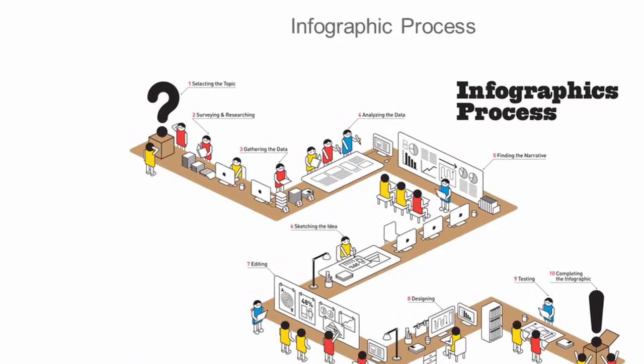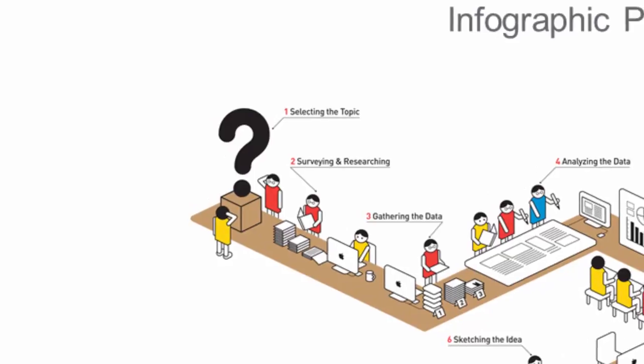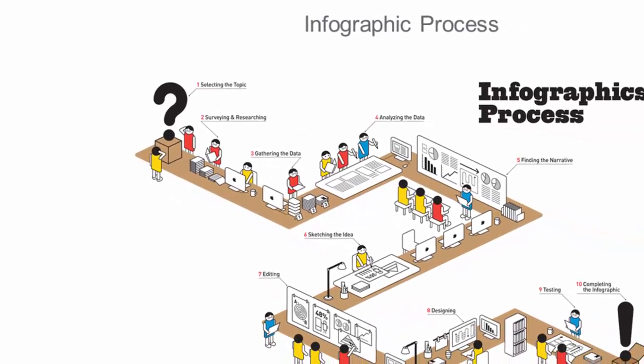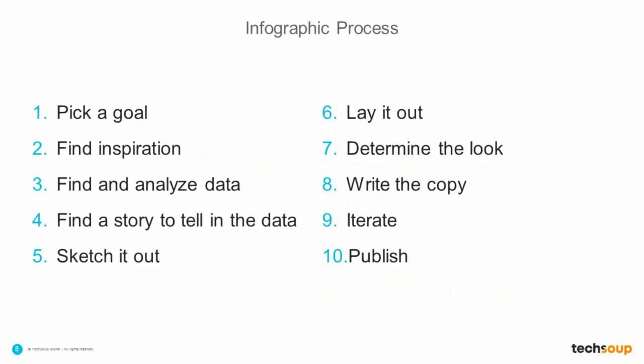I'll walk through each of these steps to explain some of their finer points. This process goes from something as simple as selecting the topic of your infographic all the way through gathering and analyzing the data, sketching out your idea, editing it all together, and then testing it and completing it to make sure that everything works with your audience. Of course, this infographic also assumes that you have an in-house designer, editor, and data analyst, which — let's be honest — not a lot of nonprofits have. So when it comes to infographics that I create, I pretty much do this myself, and I'm going to assume that you do too.